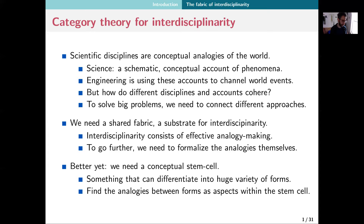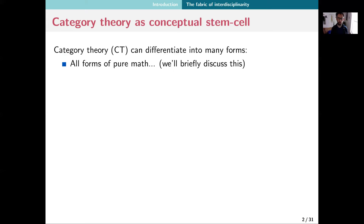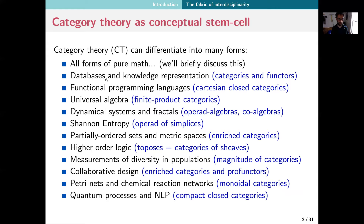We would find the analogies between these forms as aspects within the stem cell. Stem cells in a human differentiate into the brain, the liver, the circulatory system, and all sorts of other things. The fact that it comes from one single stem cell means we find the analogies and connectors between the various systems in our body in the fact that they come from this unified origin. So I'm proposing category theory as a kind of conceptual stem cell — it can differentiate into a large variety of different forms, including into all sorts of forms of pure math, but also throughout science.